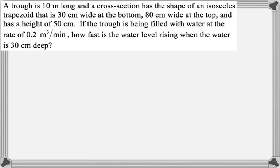So we have a trough that is 10 meters long, a cross-section has the shape of an isosceles trapezoid that is 30 centimeters wide at the bottom, 80 centimeters wide at the top, and has a height overall of 50 centimeters. So one of those dimensions is in meters, and three of them are in centimeters.